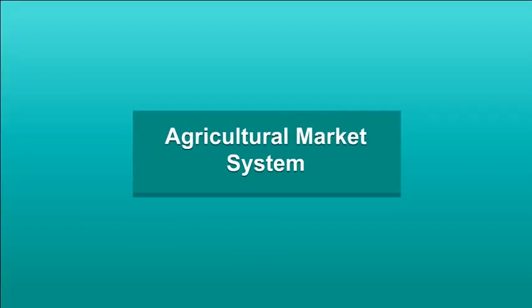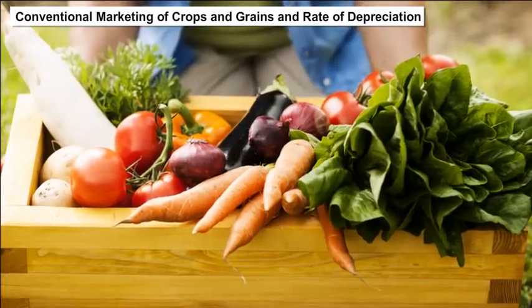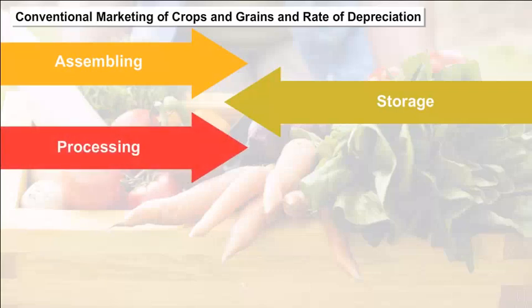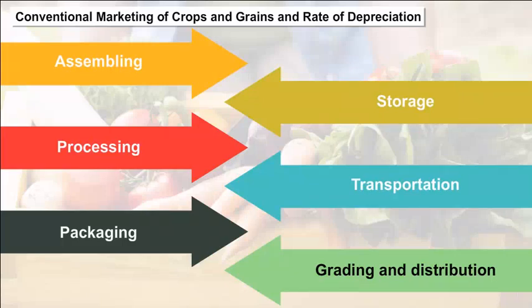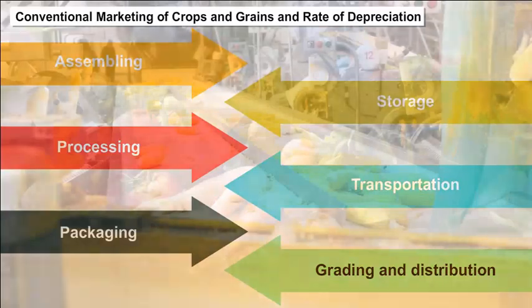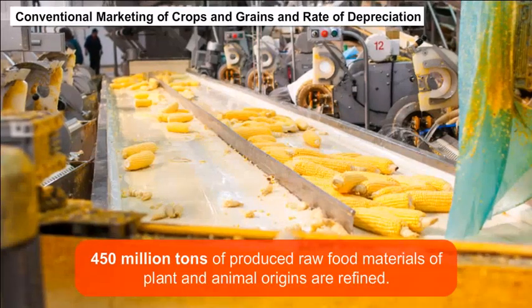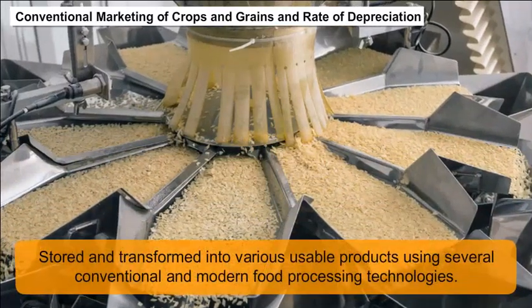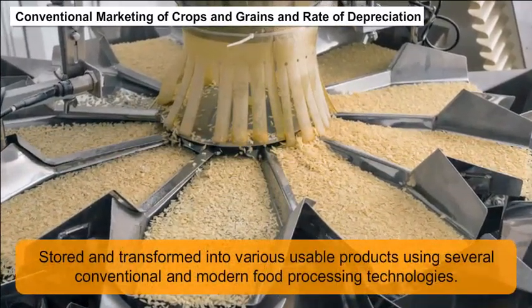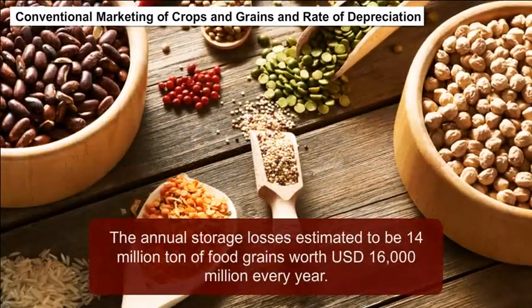Agricultural marketing is an entire process consisting of assembling, storage, processing, transportation, packaging, grading and distribution of different agricultural commodities throughout the country and even abroad. In India, 450 million tons of produced raw food materials of plant and animal origins are refined, stored and transformed into various usable products using several conventional and modern food processing technologies.